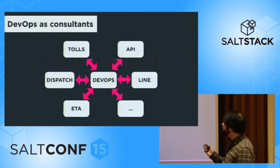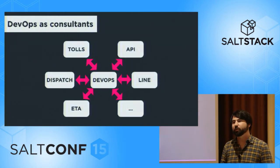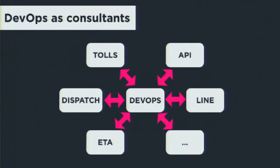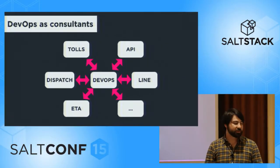The DevOps team acts as a consultant between other teams. We run a service-oriented architecture and we have a very large number of services. What the DevOps team does is interact with all the teams, writing tooling to support them in doing their operations to ensure that everything is consistent across the services and that everything generally just works.